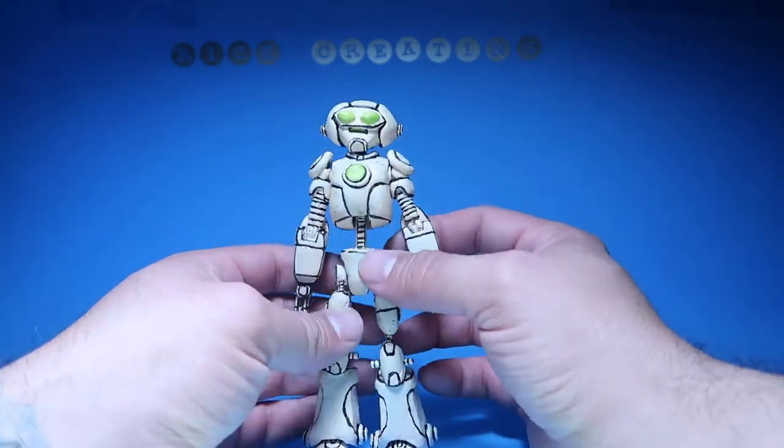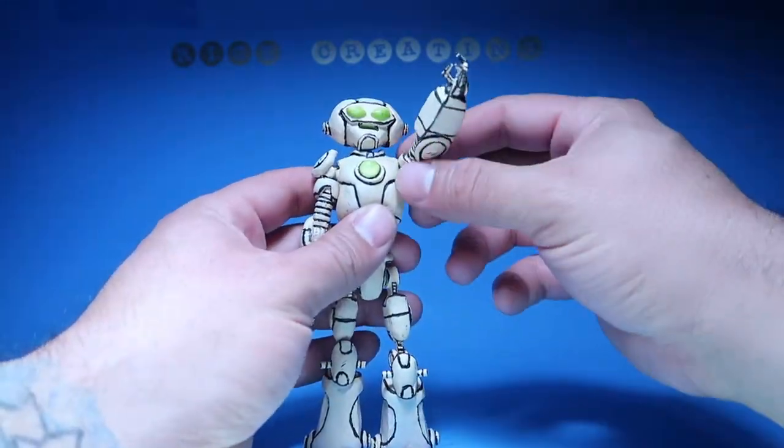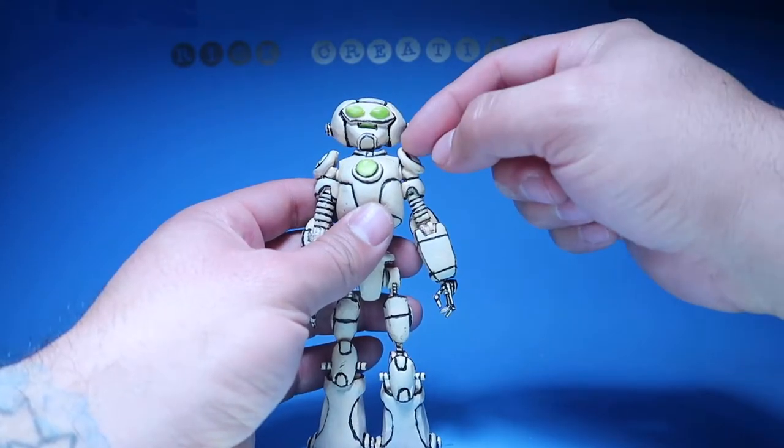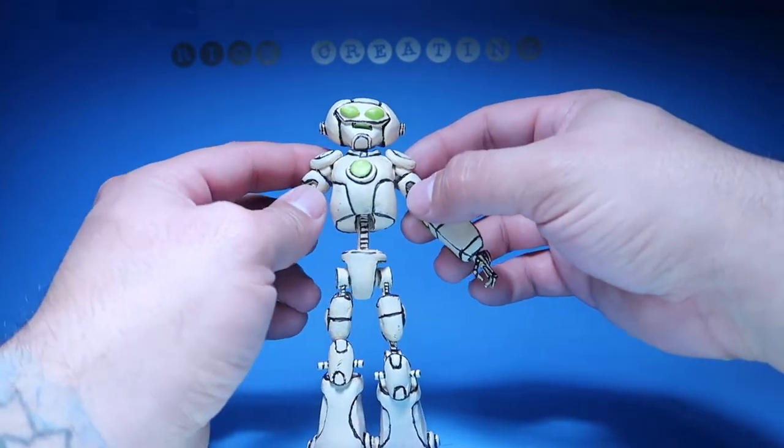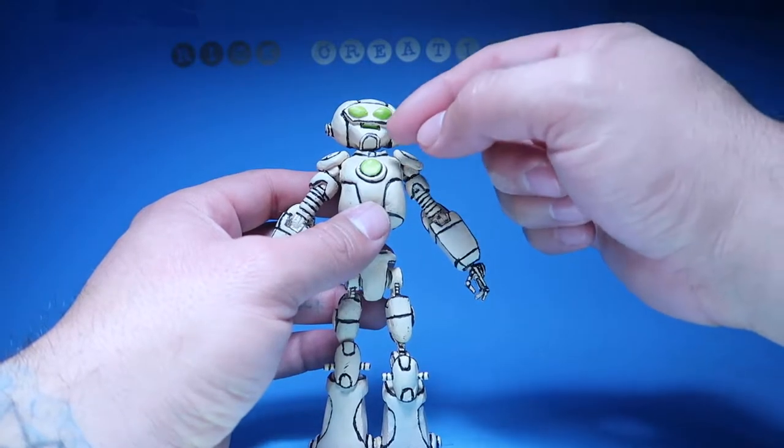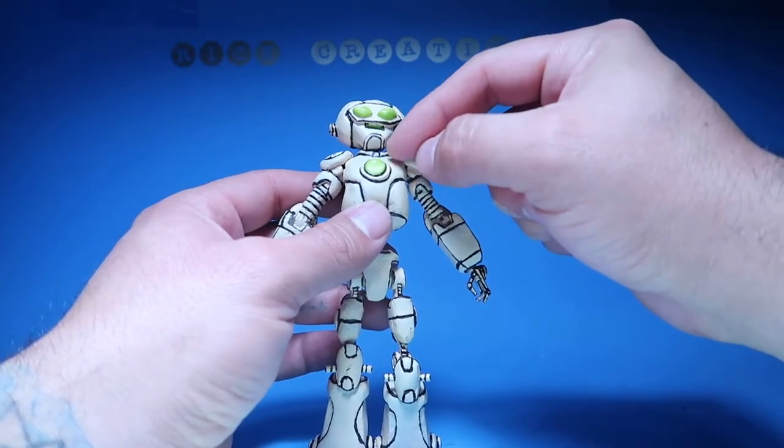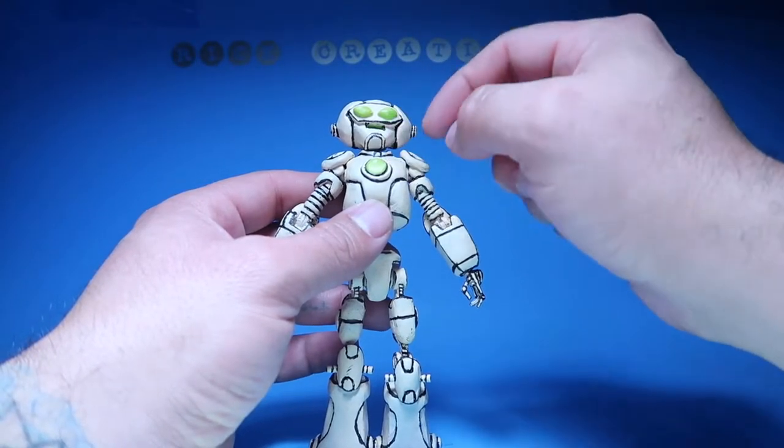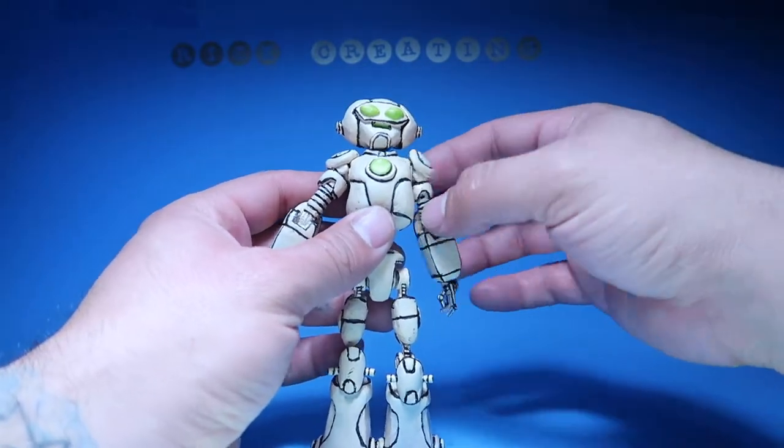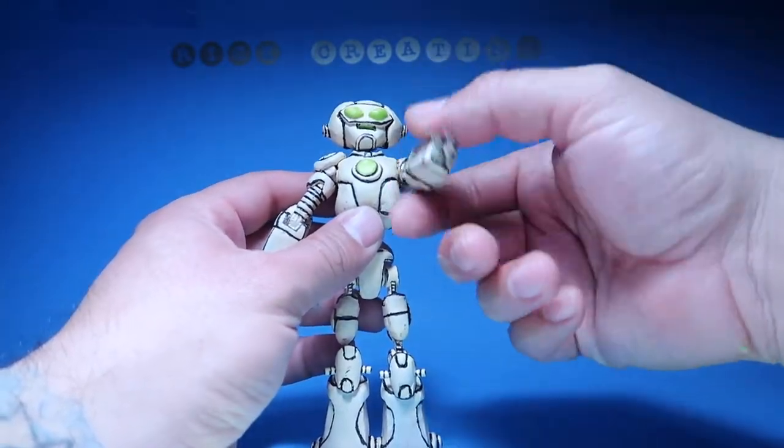So anyways, as far as articulation goes, he's pretty well articulated. The shoulder pads gave me a hard time because either I got them stuck to the actual shoulder of the chest piece or to the arms, but it made more sense to me on the arms because that way he has more range of movement.